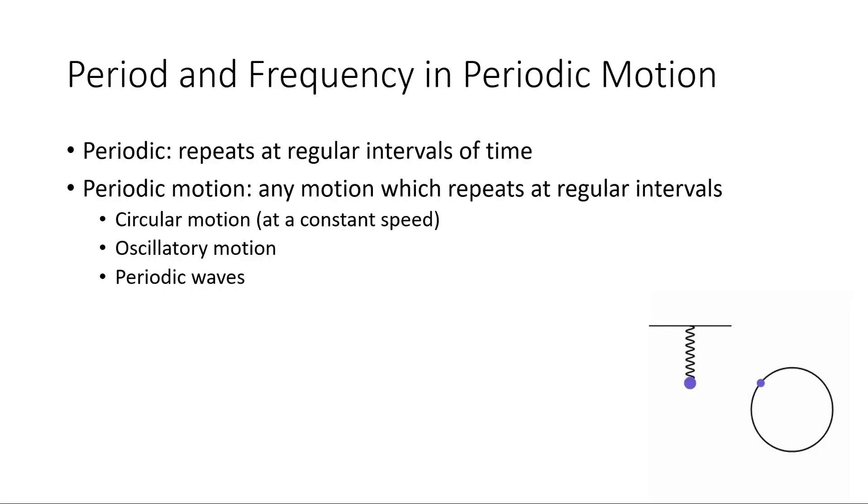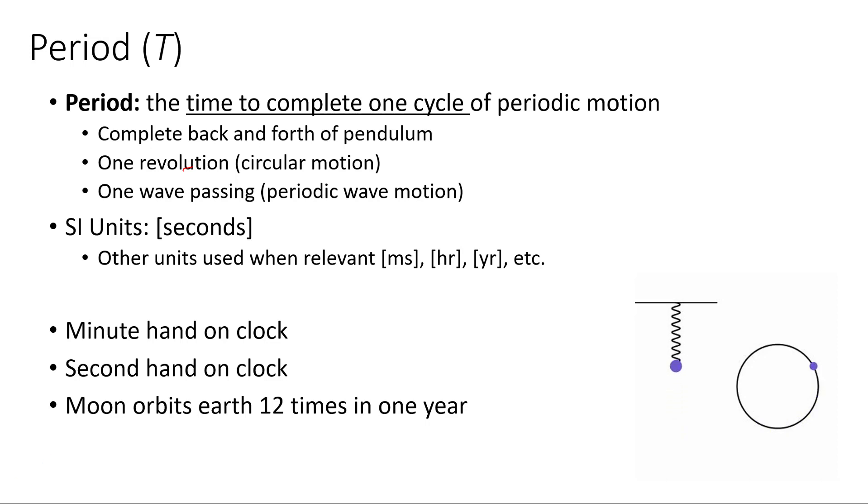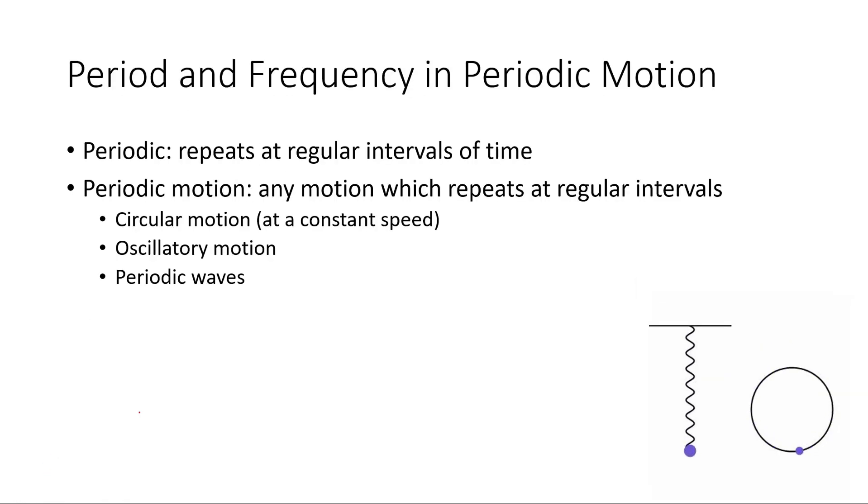This is the lecture on period and frequency in periodic motion, which includes... well, periodic motion is any motion that repeats at regular intervals of time. So we can have periodic events that repeat over time or we can have periodic motion which repeats. Circular motion is one example of periodic motion as long as it's at a constant speed. Oscillatory motion, that is back-and-forth motion like a pendulum or a mass on a spring, is periodic, and waves can also be periodic.